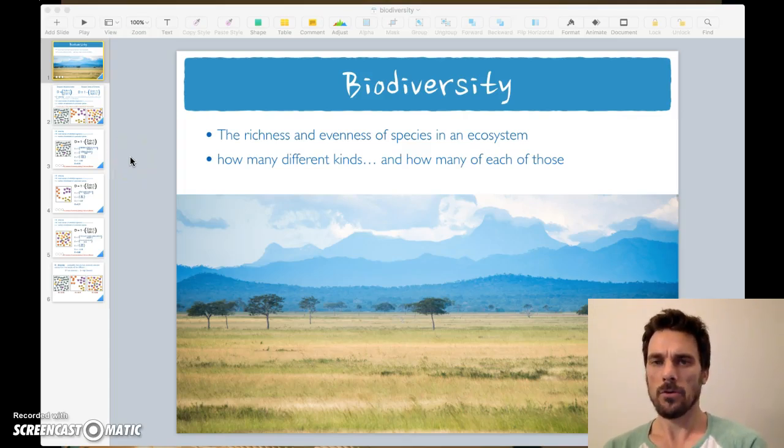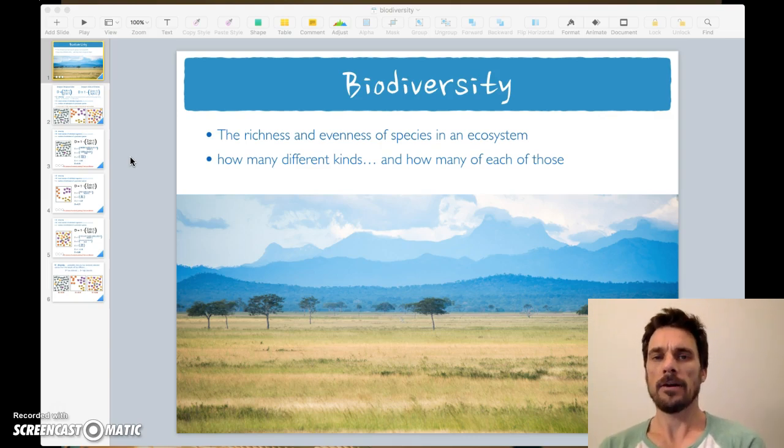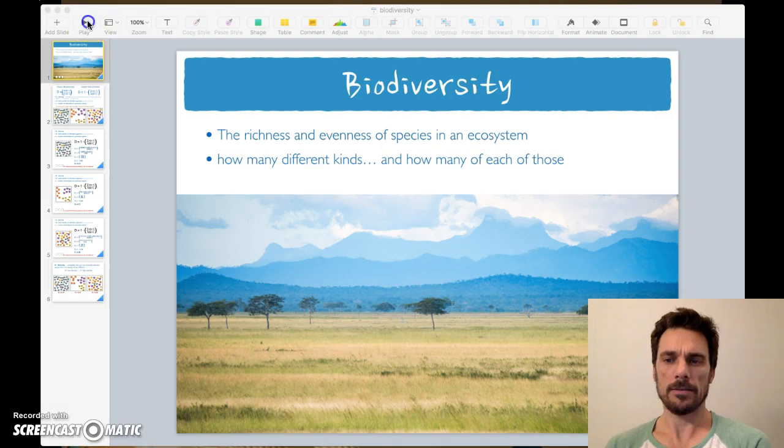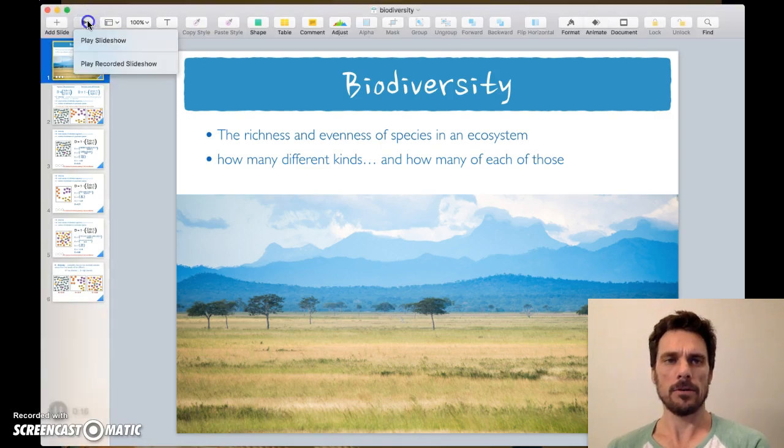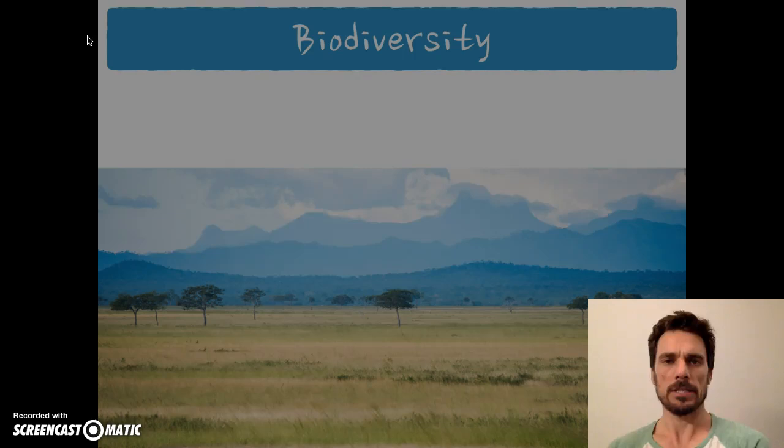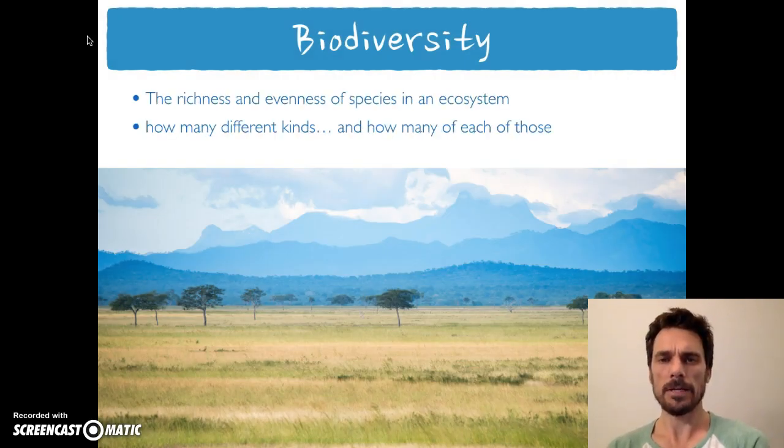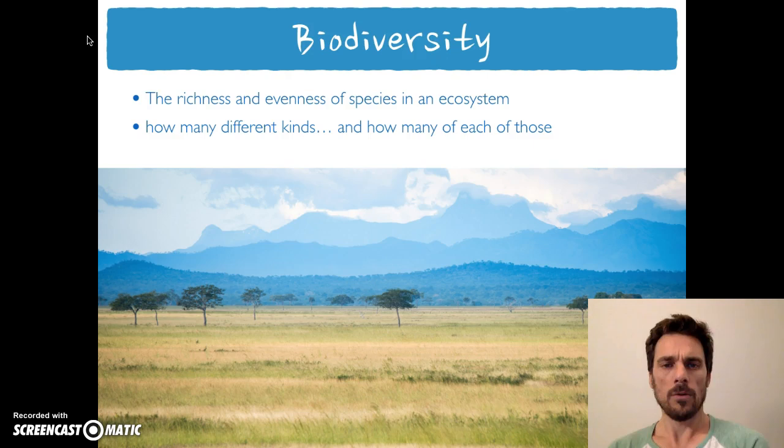Hi, and here is a quick tutorial about biodiversity and calculating the diversity of an area using Simpson's index. There are a couple different types of formulas to calculate, so I'm going to push play on this tutorial slideshow and we'll get started.